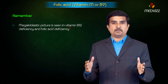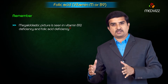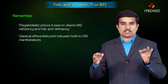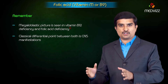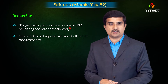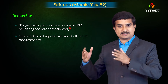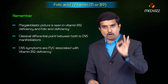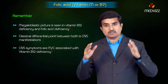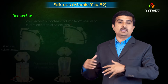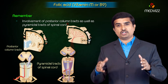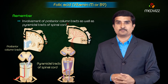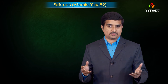The histidine load test is used to assess folic acid deficiency. A megaloblastic picture is seen in both vitamin B12 and folic acid deficiency. The classical differential point between the two is CNS manifestations: CNS symptoms are more commonly associated with vitamin B12 deficiency, where there is typically involvement of the posterior column tracts as well as the pyramidal tracts of the spinal cord.